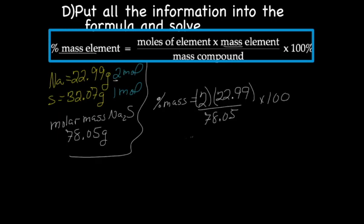And that gave me 58.91 percent. We don't count the moles as sig figs. It's just a counting. So we look at the other numbers, and we've got four and four. So our final answer is going to be Na is 58.91% of the mass of Na2S.